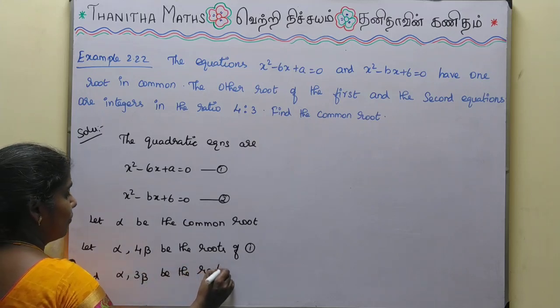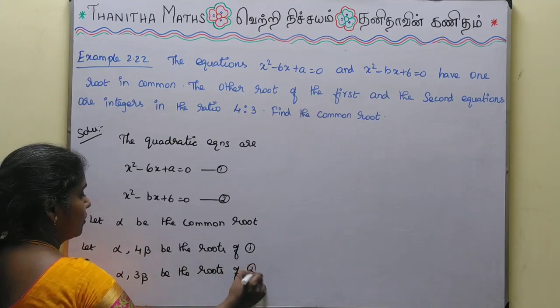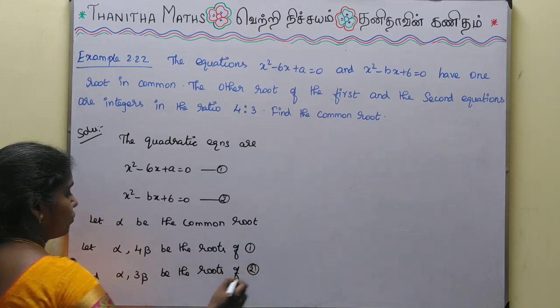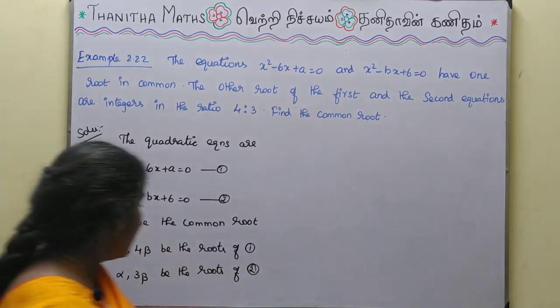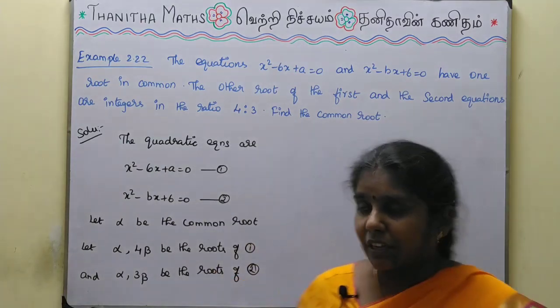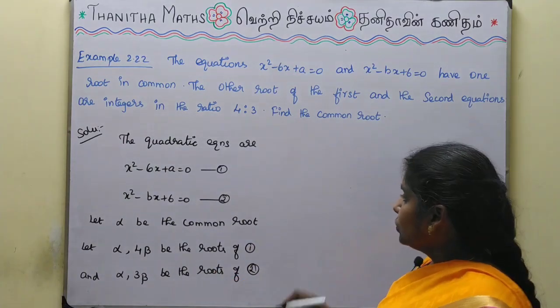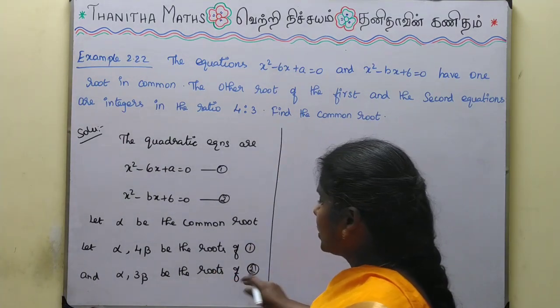The roots of the first equation are alpha and 4 beta. The roots of the second equation are alpha and 3 beta, since the other roots are in the ratio 4 to 3.